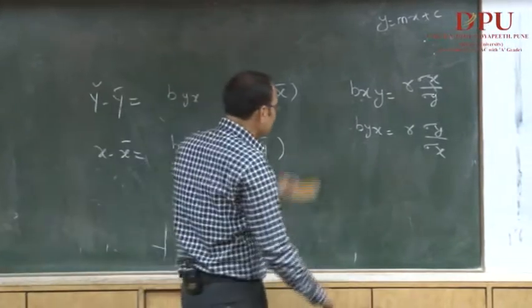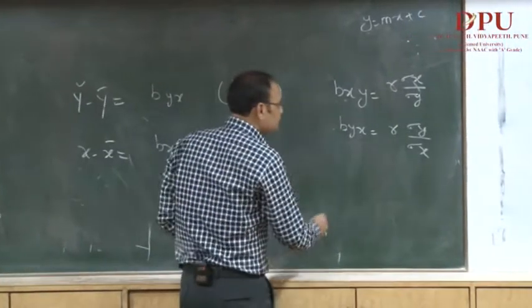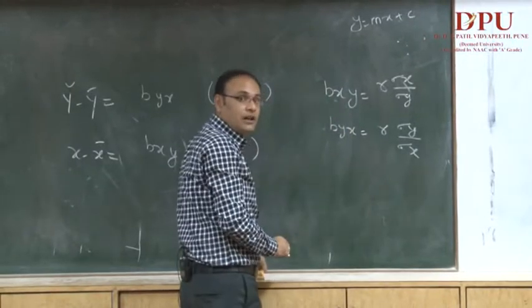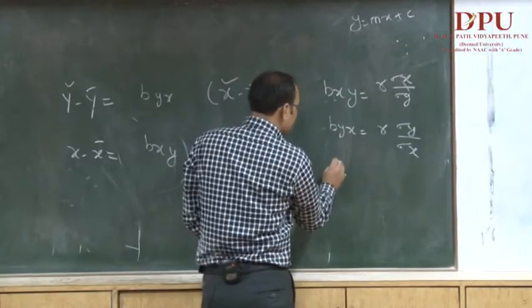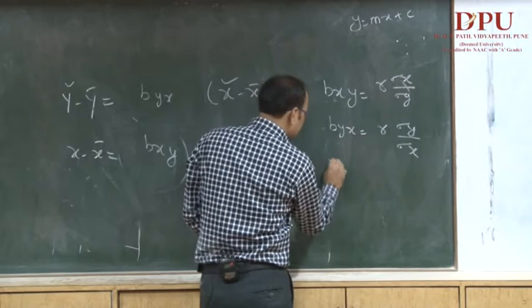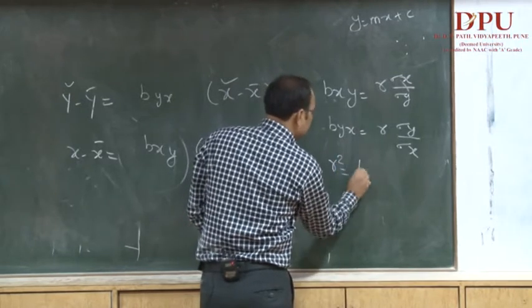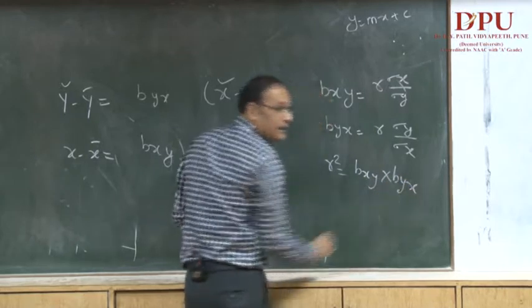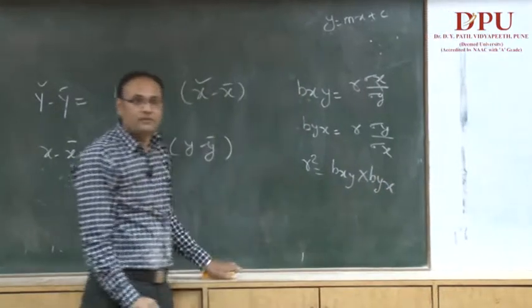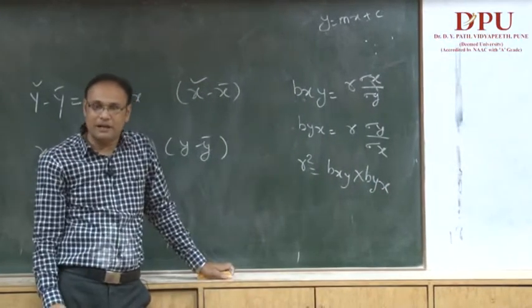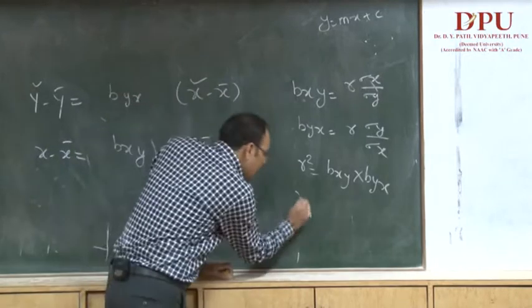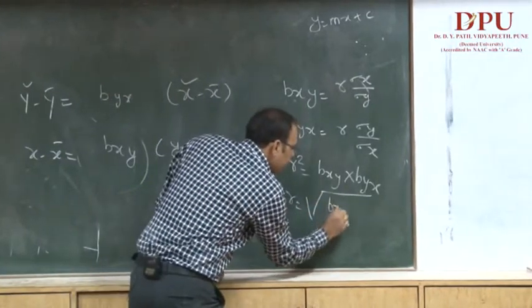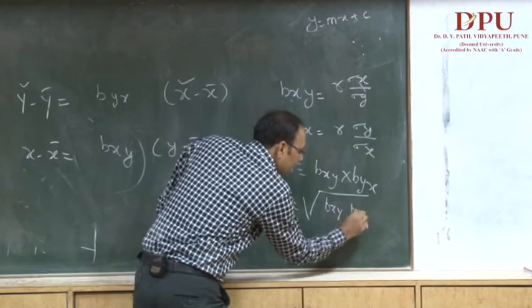One more important relationship: if you multiply bxy and byx together, r squared equals bxy times byx. Therefore, r equals the square root of bxy times byx.